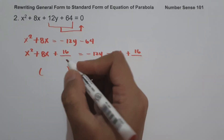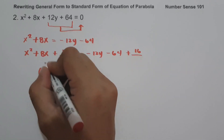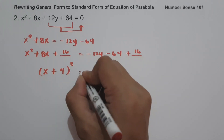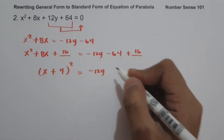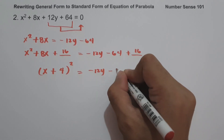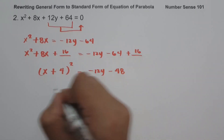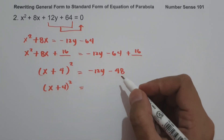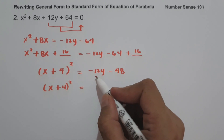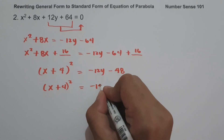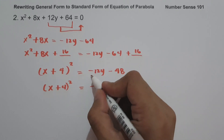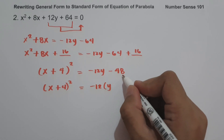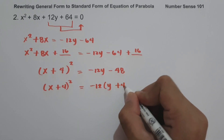Let us factor this one. The square root of x² is x, the sign of the middle term is positive, and the square root of 16 is 4, so we have (x + 4)². Then we have -12y; -64 + 16 = -48. The greatest common factor between -12y and -48 is -12. Dividing: -12y ÷ -12 = y, and -48 ÷ -12 = +4.